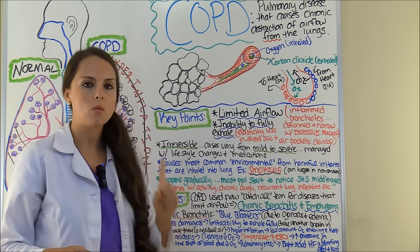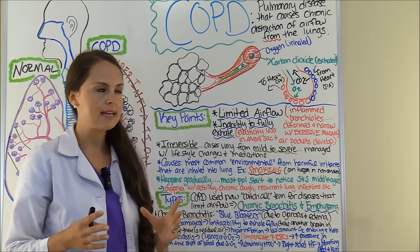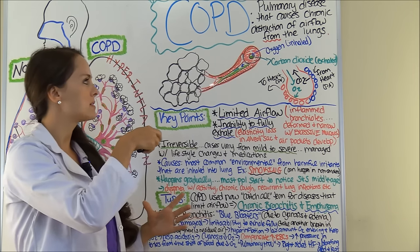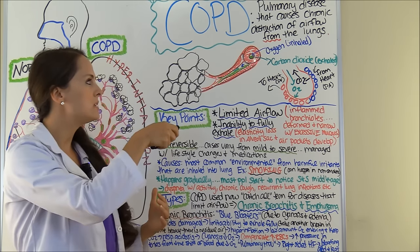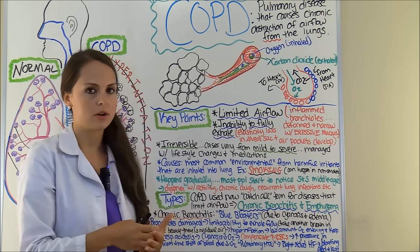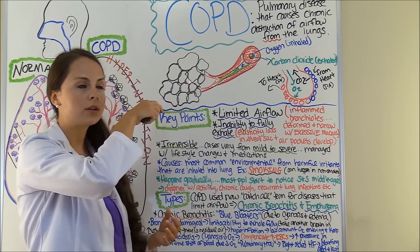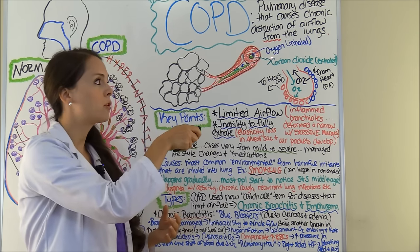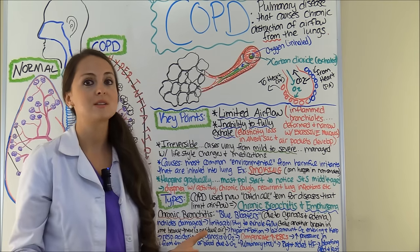Key point one: with this disease there is limited airflow. The bronchioles have inflammation which has become chronic and led to the bronchial becoming deformed and narrow, along with excessive mucus production. This limits the amount of oxygen that can get into that bronchial to go to the alveolar sac for gas exchange, and it limits the amount of carbon dioxide coming from the alveolar sac to be exhaled.